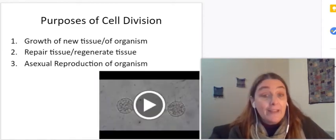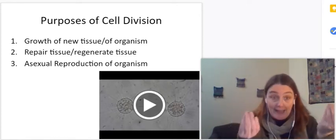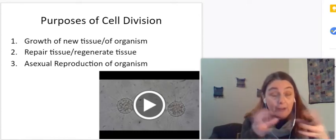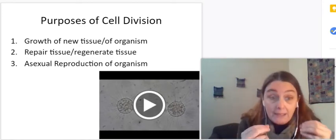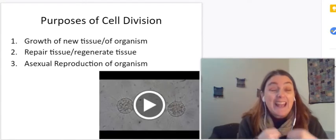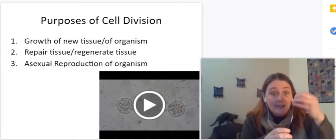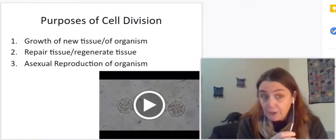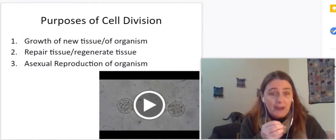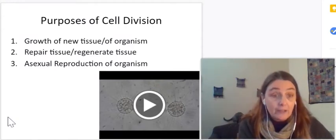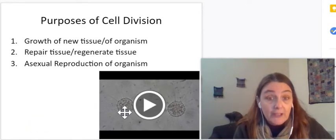We also have asexual reproduction. Now, when we reproduce, we have a sperm and an egg that fuse from two different parents. And we mix and match genes from the two parents. But many, many organisms reproduce asexually. That is, all the genes from one parent are passed to the next offspring. And the next offspring has 100% the same genes and they're identical to the parent for that reason. And they use cell division, mitosis, to reproduce asexually.